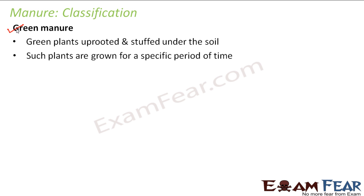Such plants are grown for a specific period of time. Green manure is intentionally prepared by farmers. For example, suppose they want to grow wheat. Before sowing the wheat seeds, they plant some other green plants throughout the field. When those plants grow a little, they are uprooted, mulched, and plowed back into the soil. In some time, these green plants stuffed under the soil become green manure, and then the wheat crop is grown in that field — giving the wheat crop good manure and increasing soil fertility for a better yield.